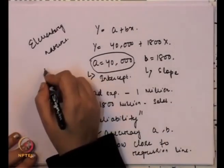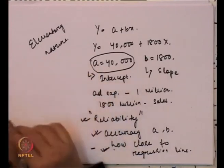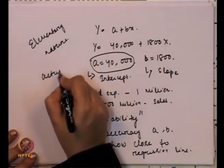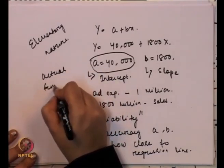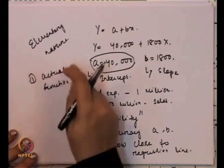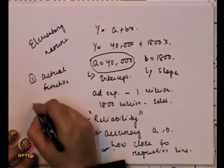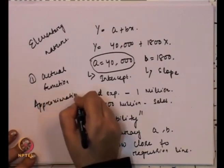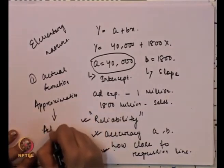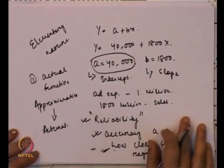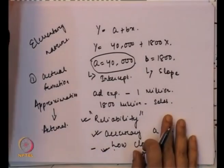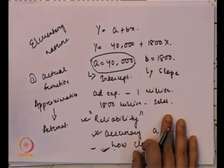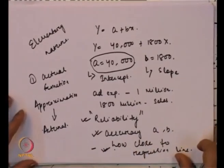The rudimentary method only indicates the visualization of a function, not the formulation of the actual function. It visualizes what the value should be rather than formulating the actual function. So in this case, it is an approximation — not the actual relationship between two variables. That is why the rudimentary method is ruled out, or not followed much to find out the value of a and b, because it considers only the approximate function rather than the actual function.